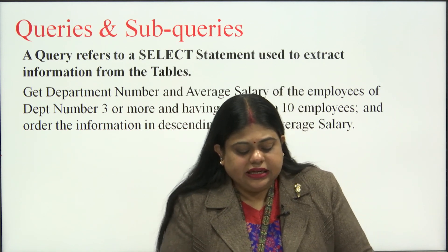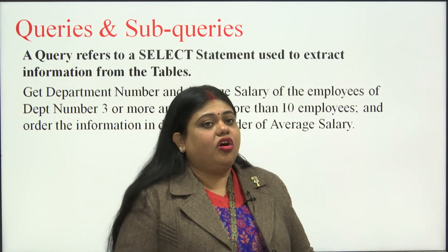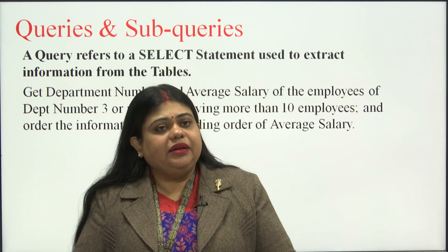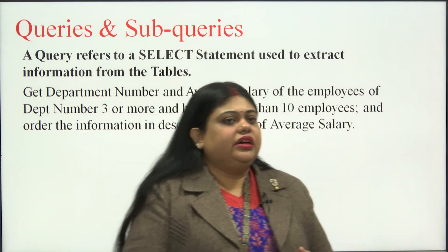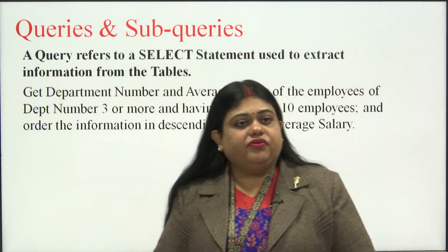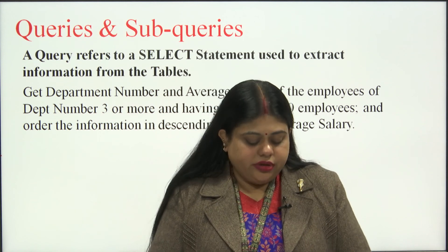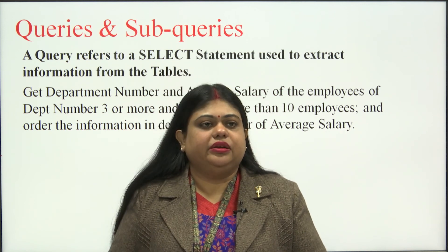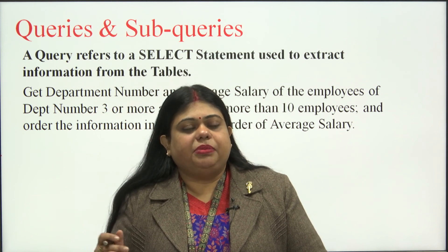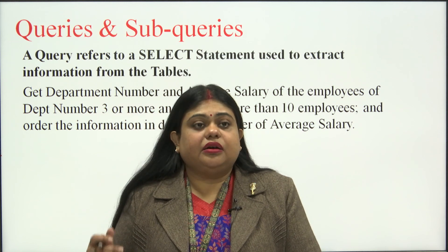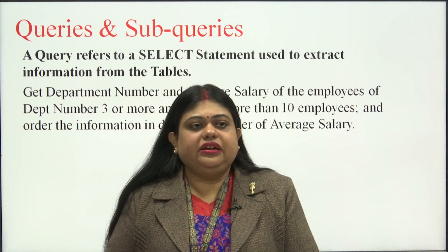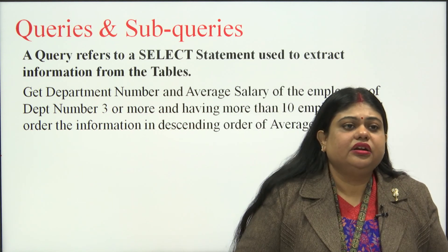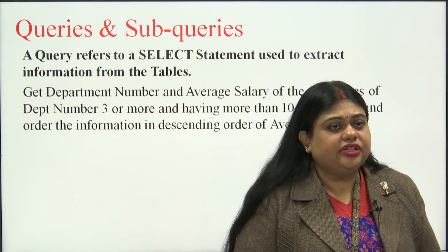Let us start with direct implementation of queries. The example says: get the department number and average salary of employees in department number 3 or more, having more than 10 employees, and order the information in descending order of average salary. We need to find the department number and average salary where department number is 3 or more, the count of employees exceeds 10, and results are sorted descending.